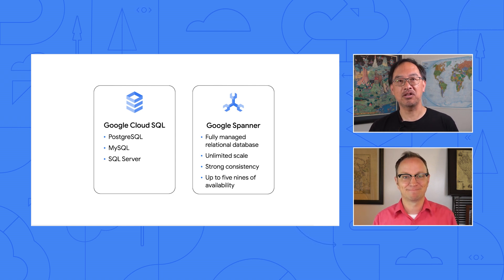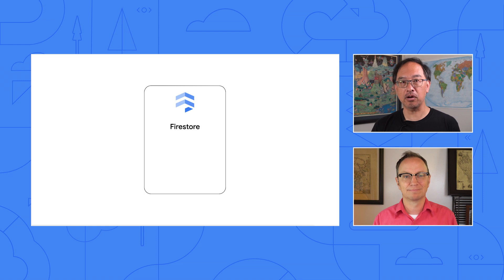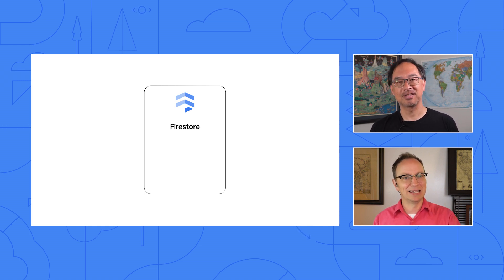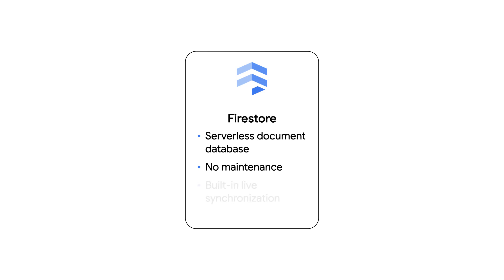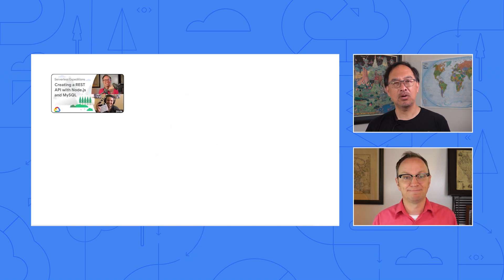Non-relational is good for internet-scale applications when your data model is simple. The NoSQL database I use most of the time, Cloud Firestore, is completely serverless. With Firestore, there's no need to provision capacity up front. I can use it for just a trickle of traffic or to access thousands of records per second, and I only pay for the operations and storage that I actually use.